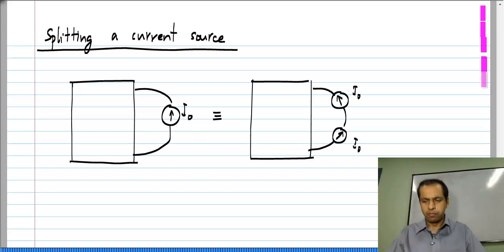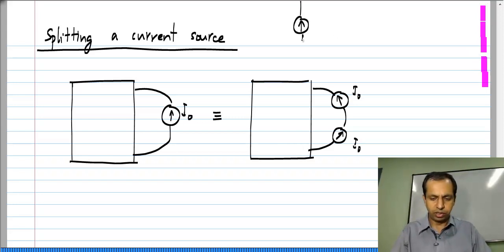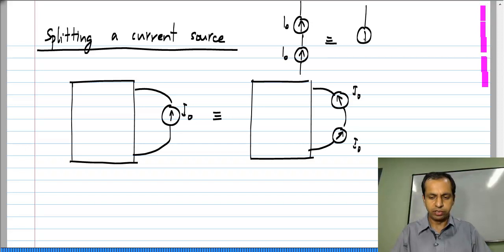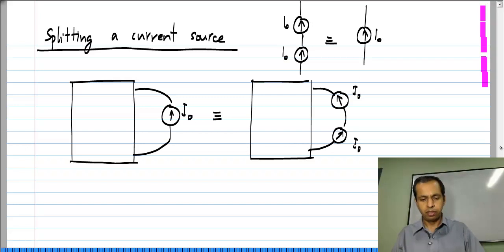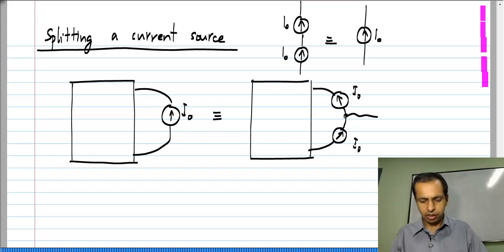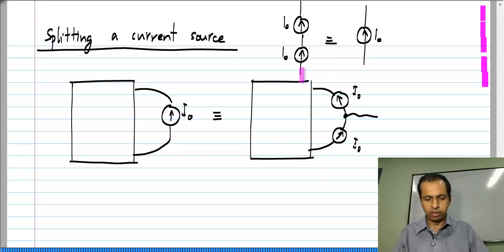In fact, we cannot in general connect current sources in series except when they have identical values. And if they have identical values, then the series combination is equivalent to a single current source — that is, if we have two currents of I naught in series, it is exactly equivalent to having a single source also of I naught. Now, what is the point of this?